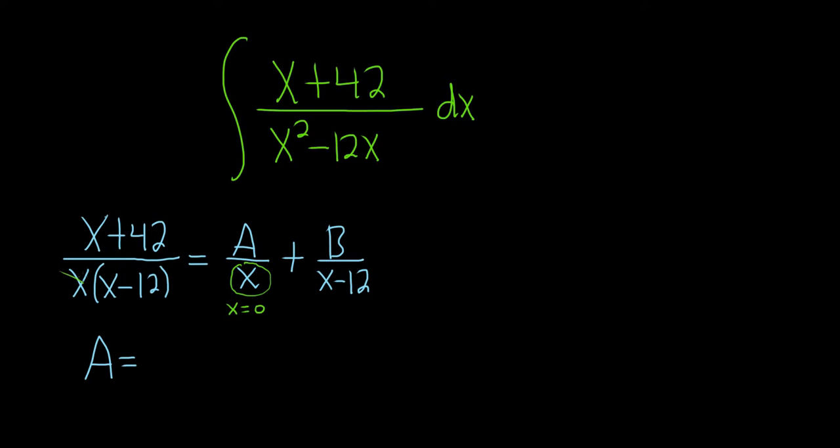You come over here and you cover it up, and you plug in 0 everywhere else. So 0 plus 42, and then 0 minus 12. This will be reduced to 42 over negative 12.